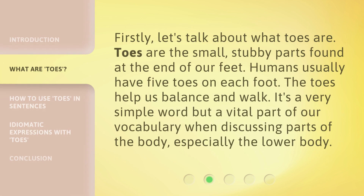Firstly, let's talk about what toes are. Toes are the small, stubby parts found at the end of our feet. Humans usually have five toes on each foot. The toes help us balance and walk. It's a very simple word but a vital part of our vocabulary when discussing parts of the body, especially the lower body.